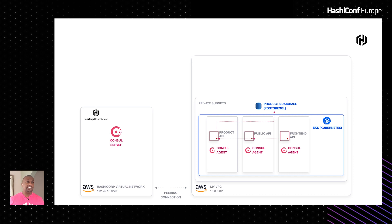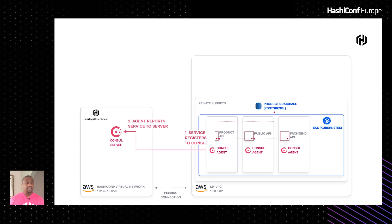Now let's add this into our application architecture. We introduced HCP earlier for Vault; it also supports Consul. We'll have a Consul server managed by HashiCorp inside our HCP HVN, and Consul agents running on every EKS node. The first thing that happens is the service registers itself to the Consul agent, and then the agent reports that service back to the Consul server in HCP — taking care of the first part of the machine-to-machine access implementation.